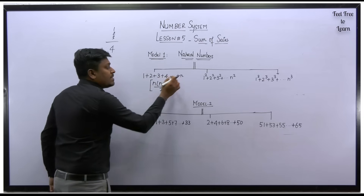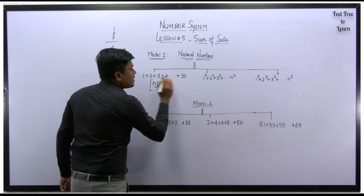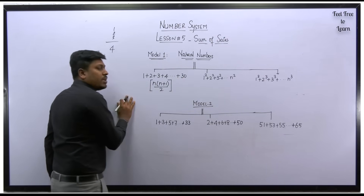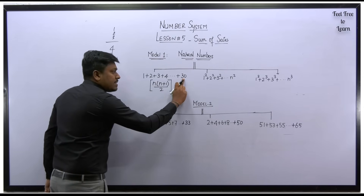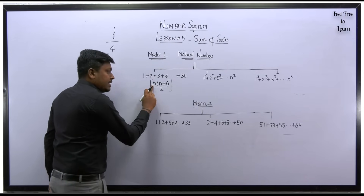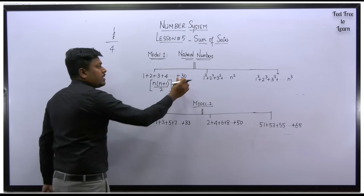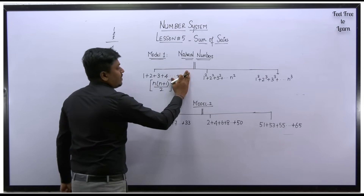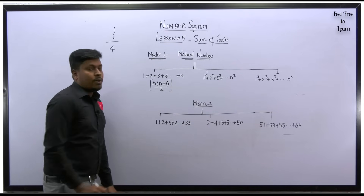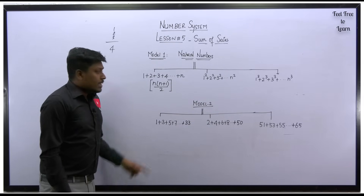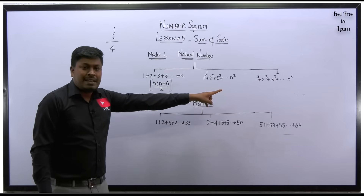For example, 1 plus 2 plus 3 plus 4 till 30 — if we need to find the sum of series, the value of n will be the last number, that is 30. So 30 into 31 divided by 2 gives you the final answer. This is formula number 1.